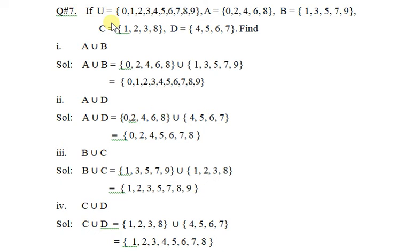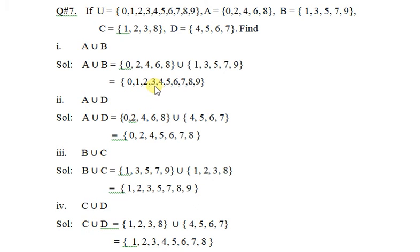Question number seven: universal set, set A, set B, set C, and D are given. Find A union B. A union B is set of A union set of B — you have to write set A and set B in proper sequence.